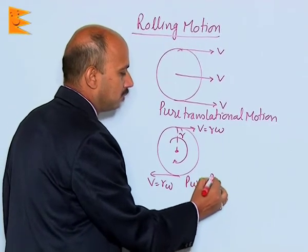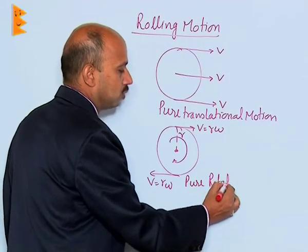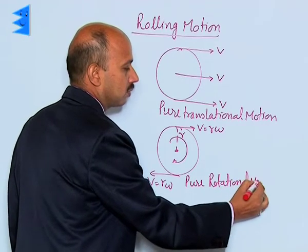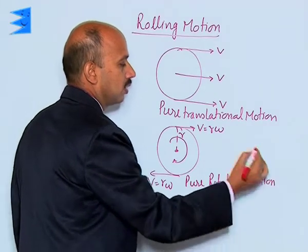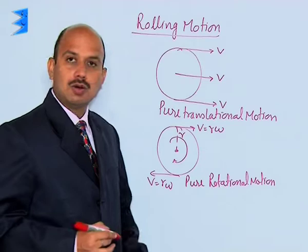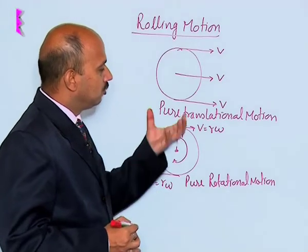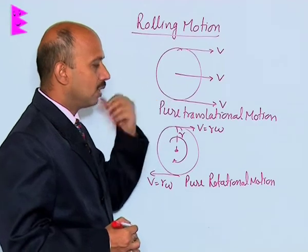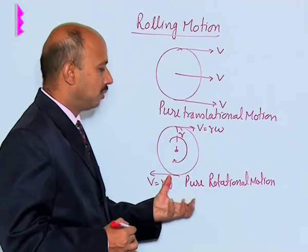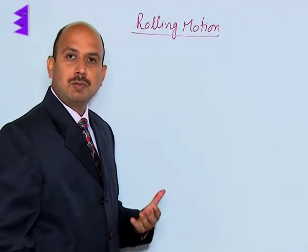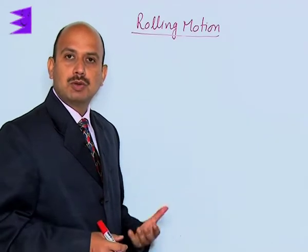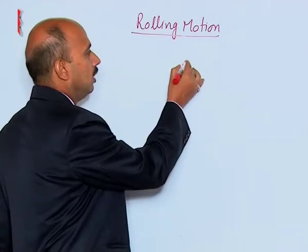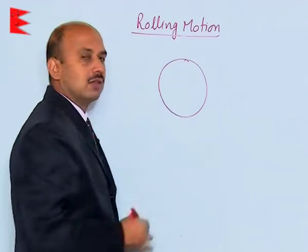This is an example of pure rotational motion. If we combine these two motions — this one having pure translational and this one having pure rotational — and we superimpose pure translational and pure rotational motion, then you will be getting the result like this.